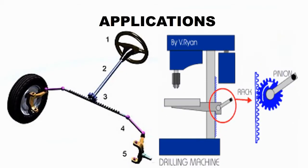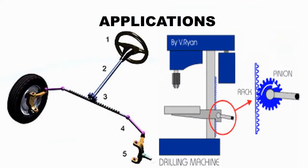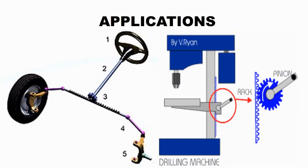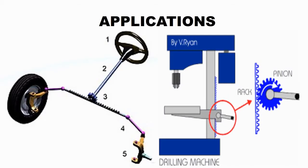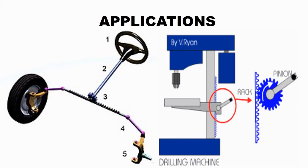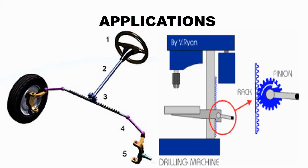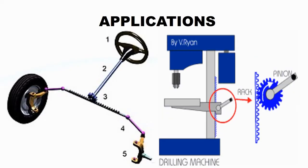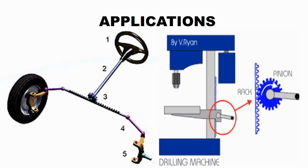A rack and pinion is commonly found in the steering mechanism of cars or other wheel-steered vehicles. Rack and pinion provides less mechanical advantage than other mechanisms such as recirculating ball, but less backlash and greater feedback or steering feel. The mechanism may be power-assisted, usually by hydraulic or electrical means.